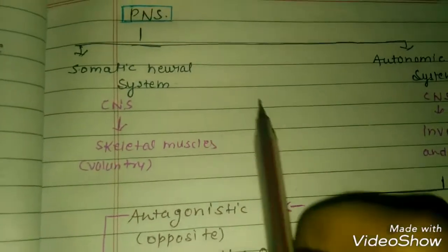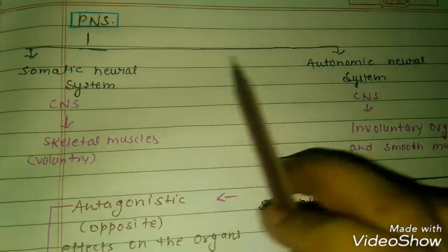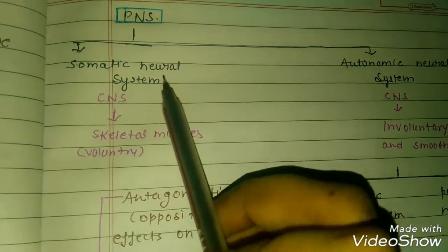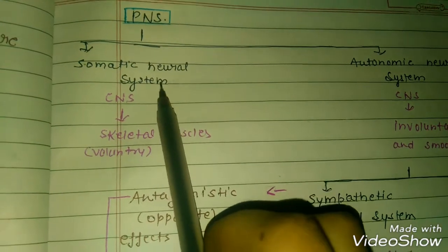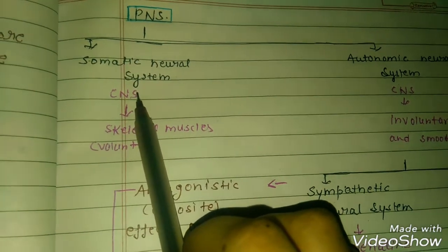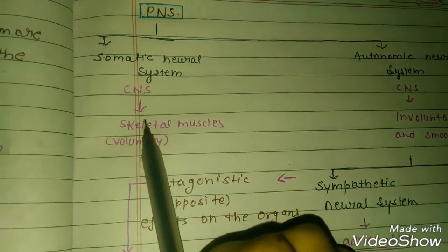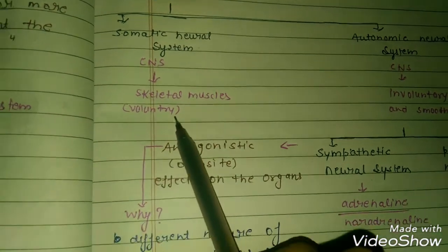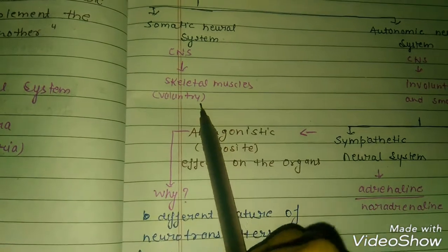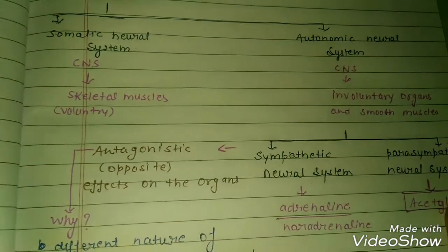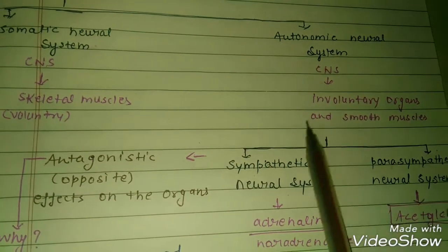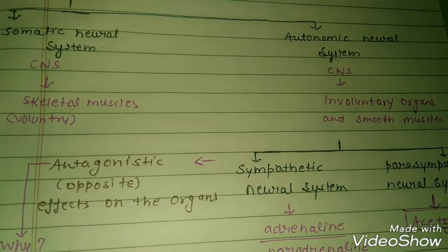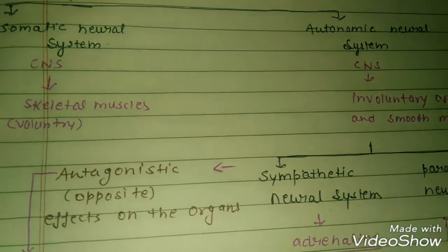PNS is divided into two parts: the Somatic Neural System and the Autonomic Neural System. In the Somatic Neural System, the CNS controls skeletal muscles — these are voluntary muscles. In the Autonomic Neural System, involuntary organs and smooth muscles are controlled. We cannot voluntarily stop involuntary and smooth muscles.